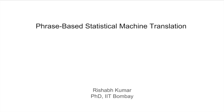Today machine translation has achieved huge accuracy compared to humans in translation. This is possible because of statistical machine translation. Statistical machine translation has two main things: word-based statistical machine translation and phrase-based statistical machine translation. Good evening everyone, I am Rishabh Kumar, and today I am here to explain one of the key important successes of statistical machine translation, which is phrase-based statistical machine translation. Before diving into it, let's talk about word-based statistical machine translation.